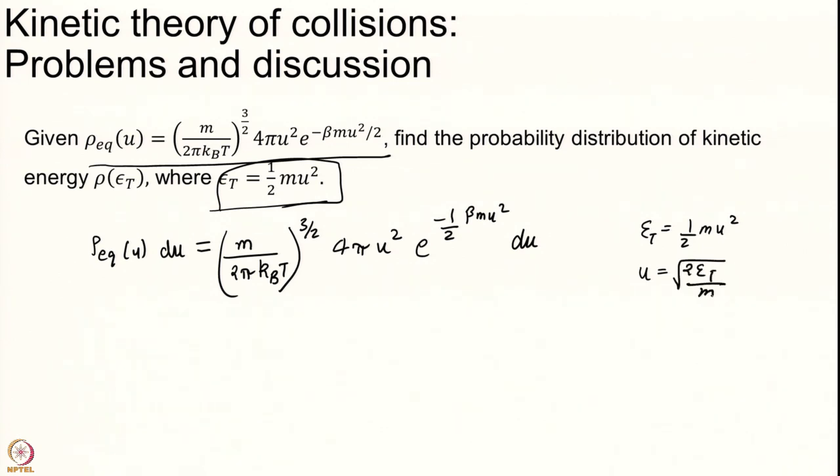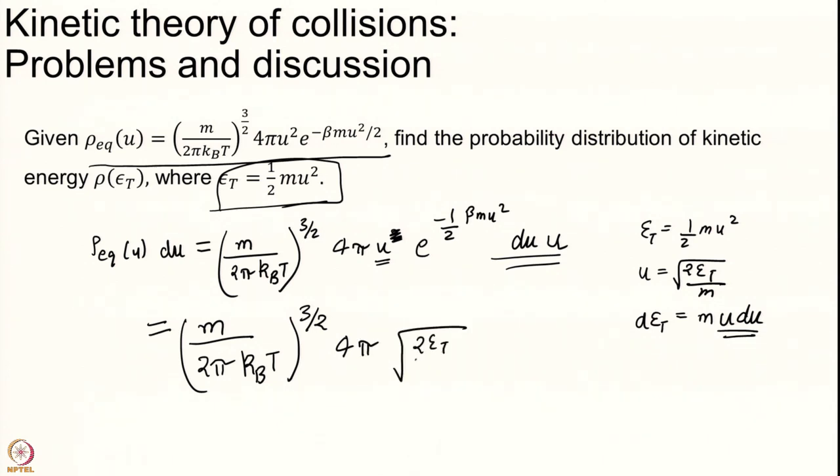E is half mu square. This is simple manipulation. This is not hard. d epsilon is m u du and I will just play around with it. You can do in any fashion that you like. I have a u square here. I will take this I will write as u here. One u I will take and write here. So I get u into du which I will use here. So this I will write as m over 2 pi kBT to the power of 3 half 4 pi u. U is root 2 epsilon over m.